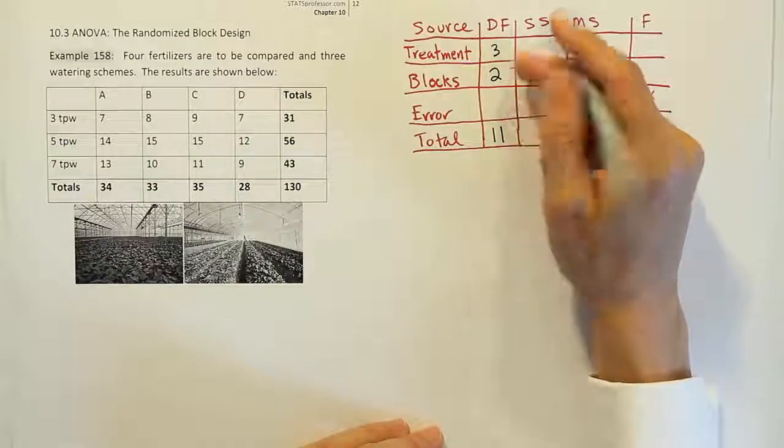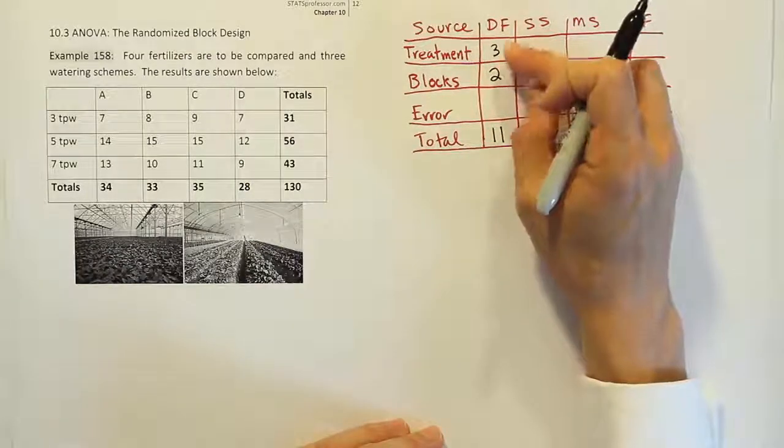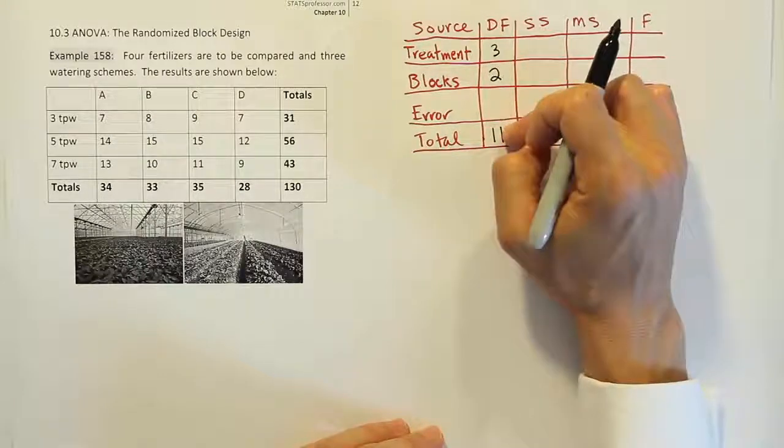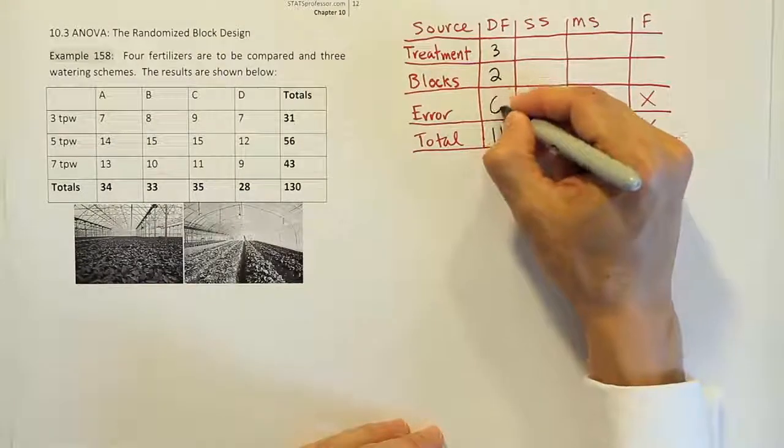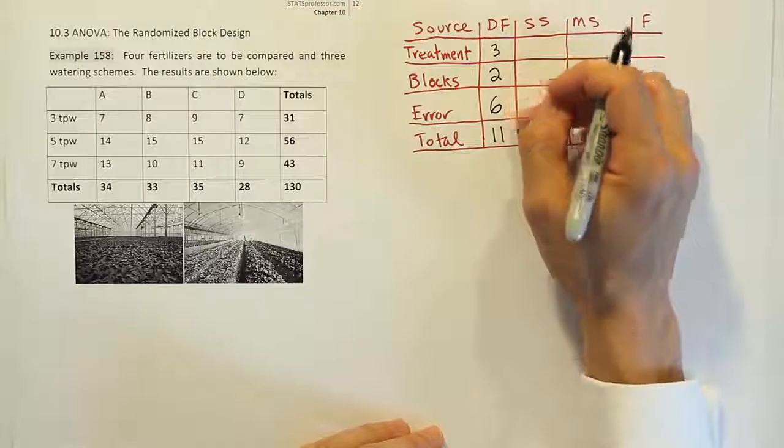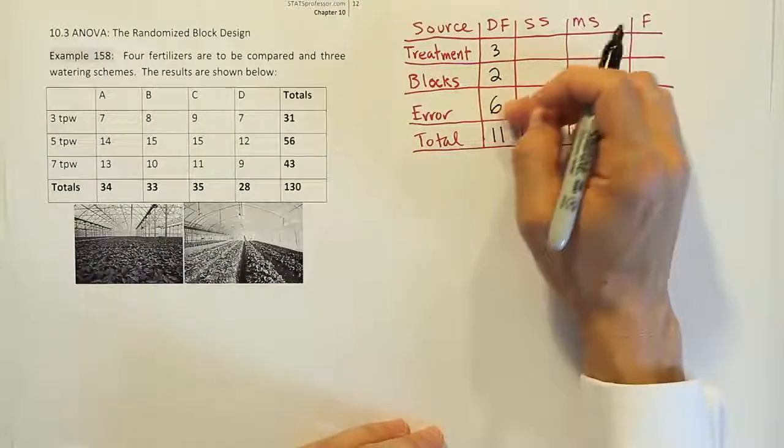And then the error degrees of freedom, if you add these two together, that will give you 5. Something plus 5 has to equal 11. What's the something? The something is 6, right?